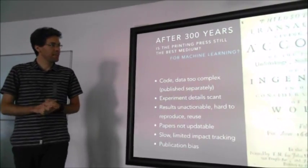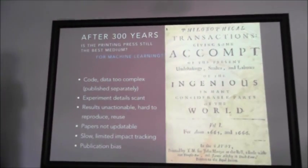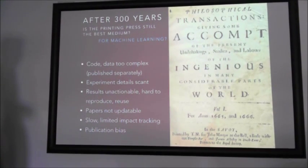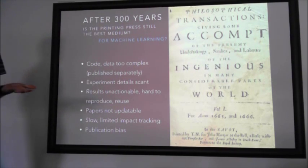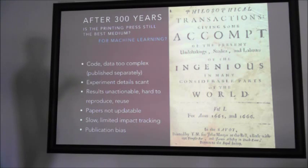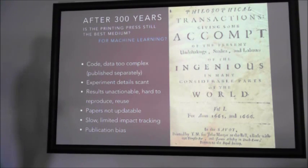Now we are 300 years later and the question is: is the printing press still the best medium for science? Especially, is it the best medium for machine learning? Because the code and the data is way too complex, so we have to publish it separately. Experiment details we can put into a paper are very scant and undetailed. All the results we put in papers — tables, figures — they're very unactionable. You cannot do anything with them afterwards. It's very hard to produce work based on that data or to reuse it.